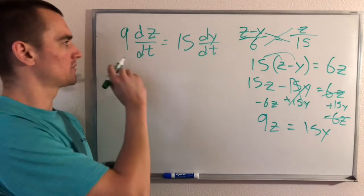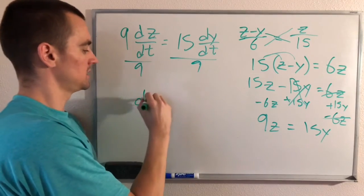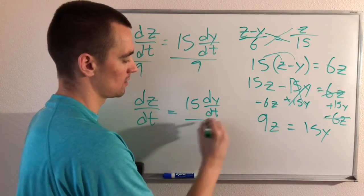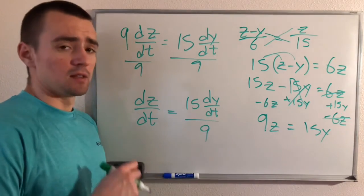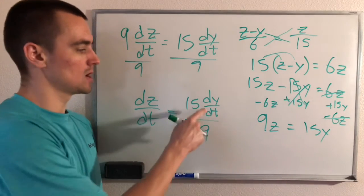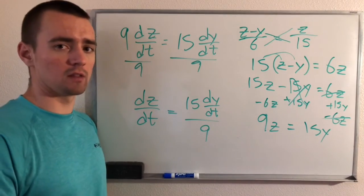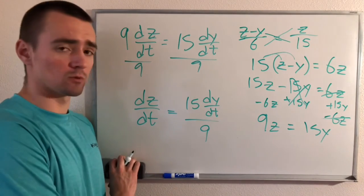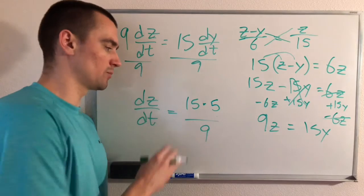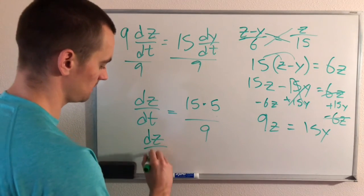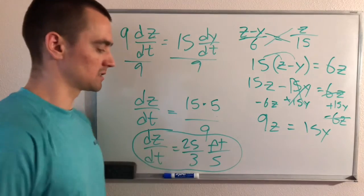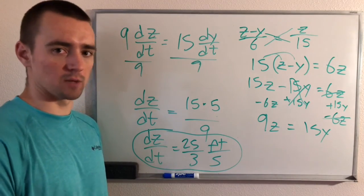Now we solve for dz/dt by dividing both sides by 9: dz/dt equals 15 times dy/dt over 9. We know dy/dt is 5 feet per second — that's just how fast the man is walking. So dz/dt equals 15 times 5 over 9, which simplifies to 25/3 feet per second. That's how fast the tip of the shadow is moving.